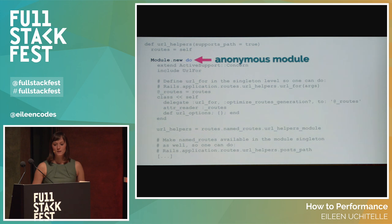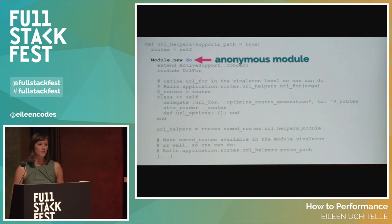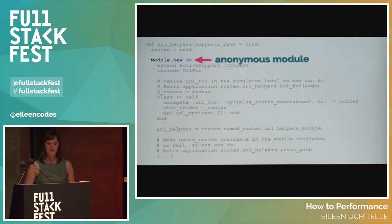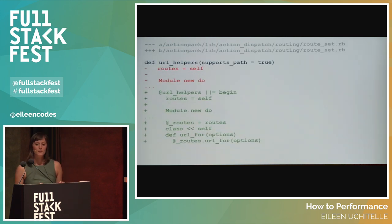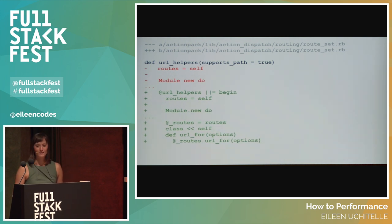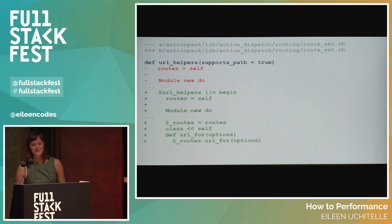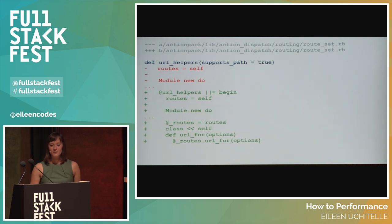We found that the method that was creating an extra constant was URL helpers. Finding that method took a lot of digging — we couldn't rely on StackProf or standard debugging tools to find it because the module is anonymous. We had to go spelunking in the Rails internals to find it. There it is: Module.new do. I looked back in the git history and found this method used to be memoized. So I was like, just add the cache back. URL helpers is now memoized, and we used to see speed improvements in our benchmarks.